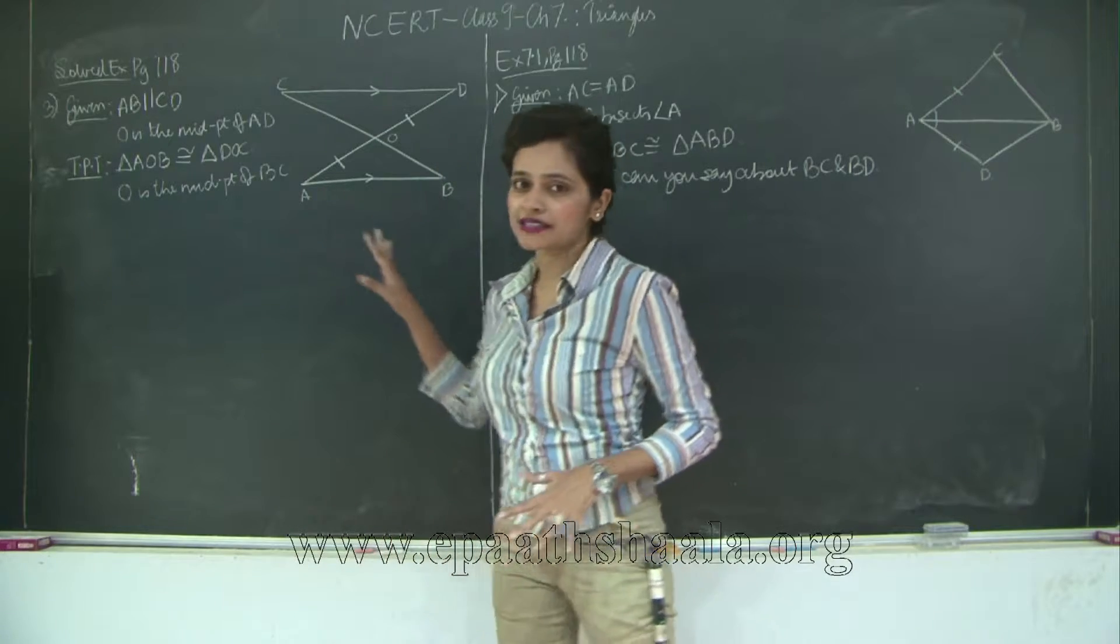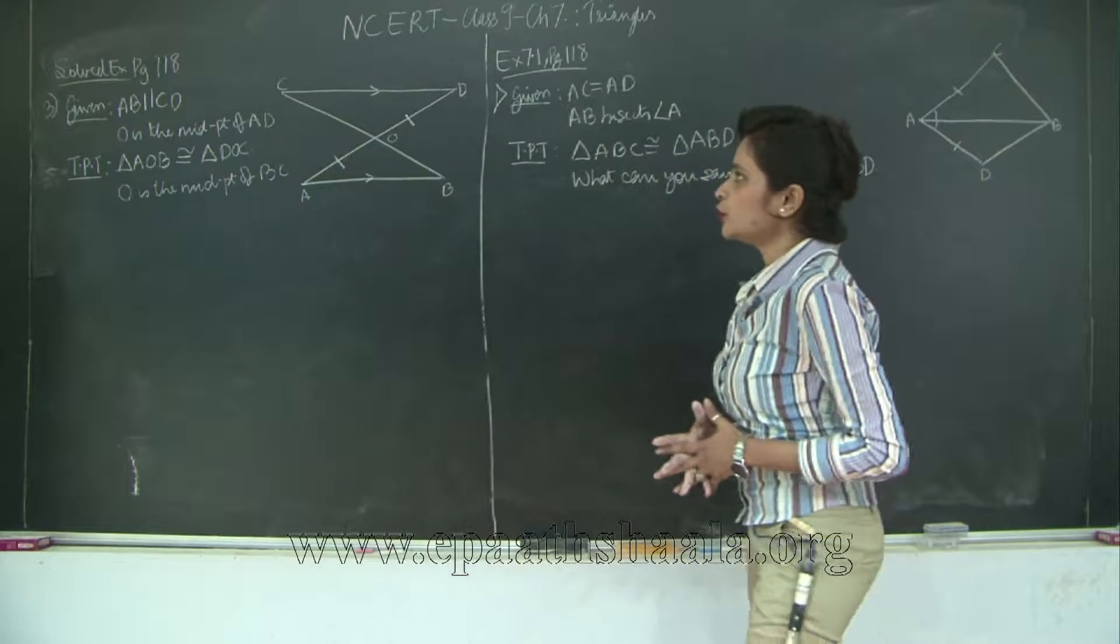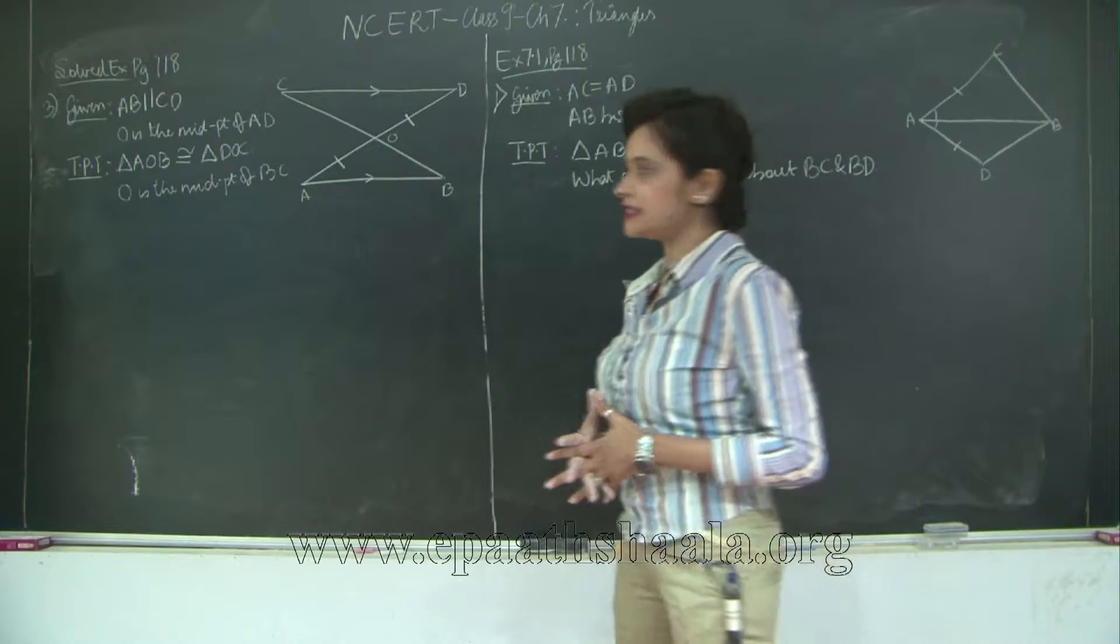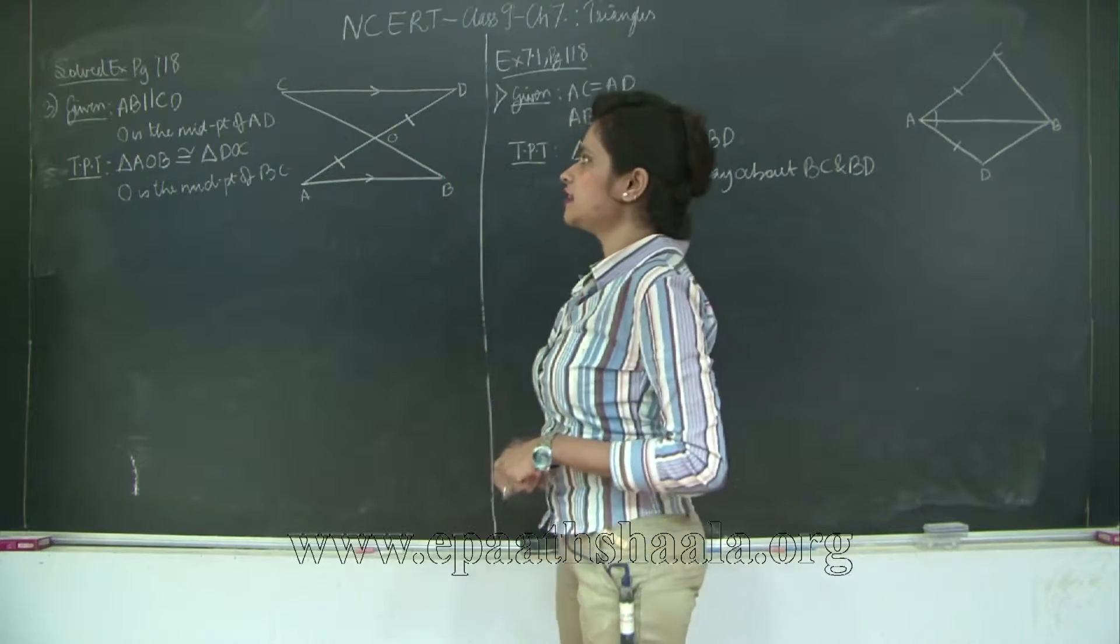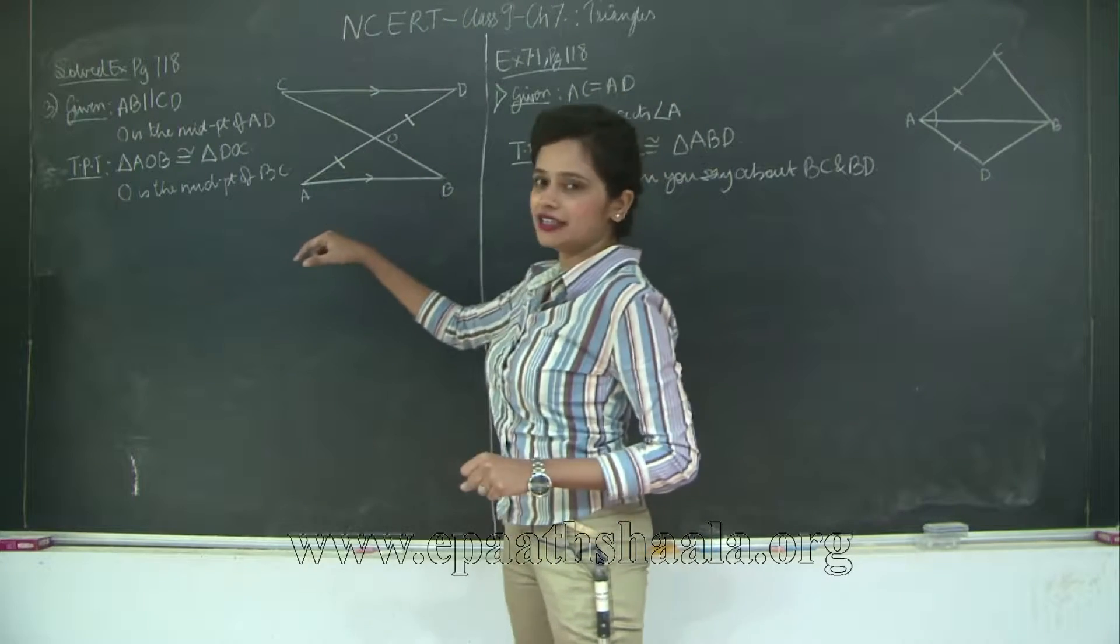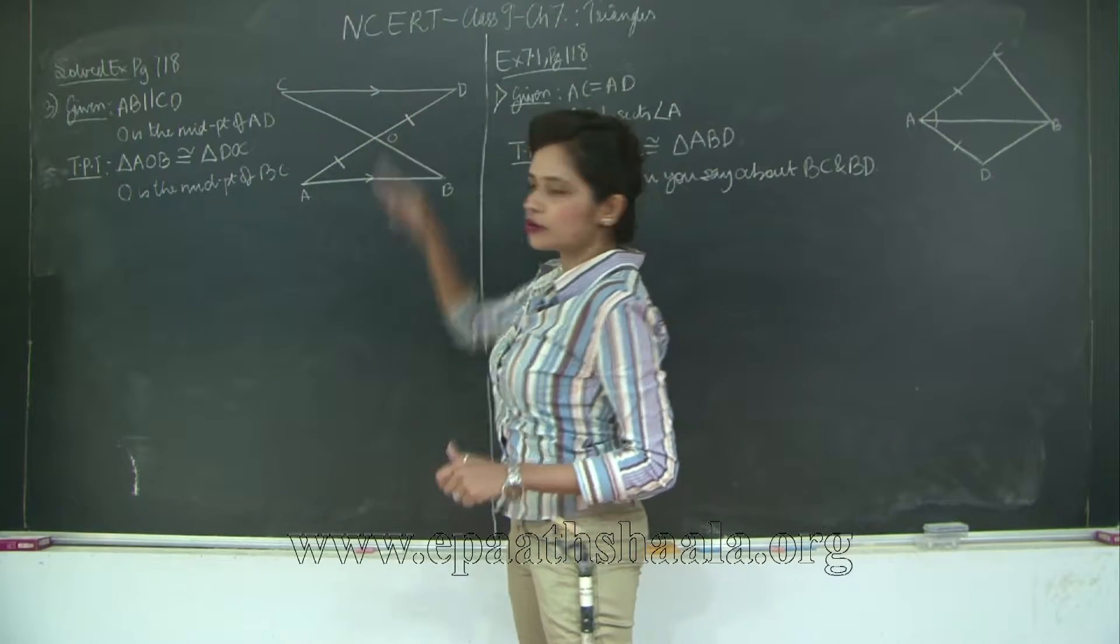So let's see what is given for the solved example. You have AB is parallel to CD. So these arrows indicate that AB is parallel to CD. O is the midpoint of AD. Therefore OA is equal to OD, correct?